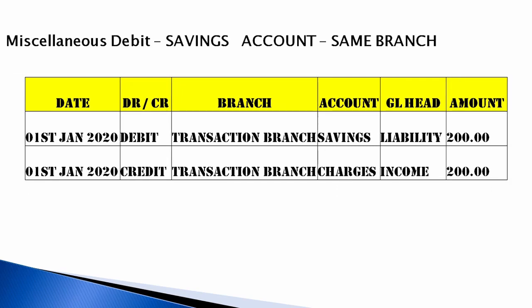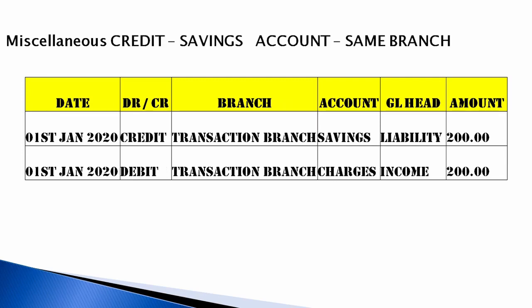For a miscellaneous debit from savings bank account at the same branch, debit the savings bank account (liability) and since it is a charge, credit the income ledger. For a miscellaneous credit to savings bank account, credit the savings account to increase the balance, and debit the income ledger — the amount is paid out from income to the savings bank account.